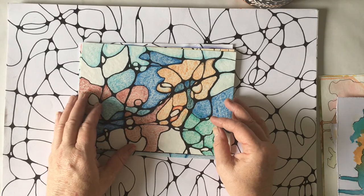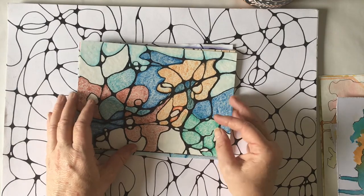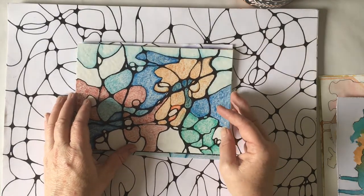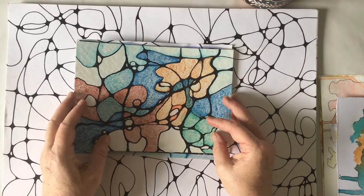Our brains dislike abstracts, so when given random scribbles, splotches, drips etc, it tends to see things in the shapes made. This can be fun to see what shows up for you.